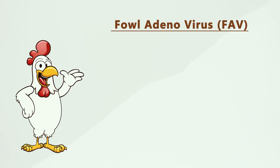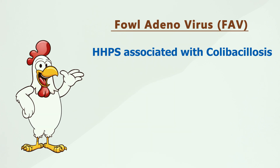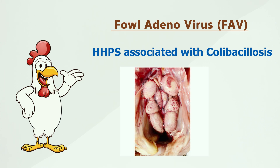When complicated with IBD or chicken anemia virus, which are immunosuppressive viruses, you will find hemorrhages on the skeletal muscles and also bursa hemorrhages. When associated with colibacillosis, you will find gelatinous fibrin covering on the surface of the liver, and sometimes kidneys are also swollen showing nephrosis.